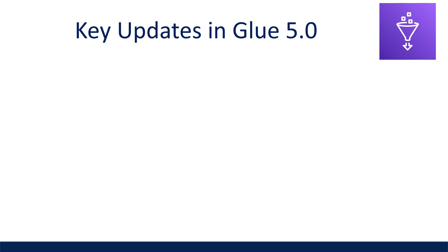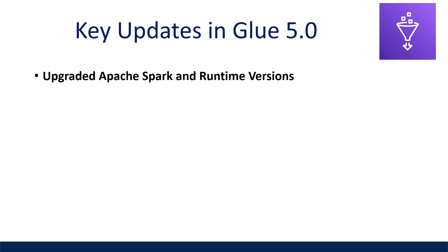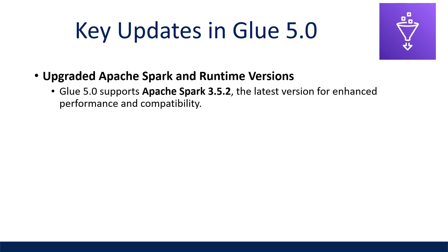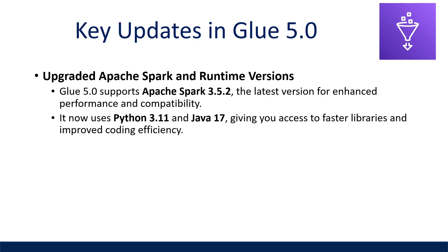Upgraded Apache Spark runtime versions: AWS Glue 5.0 supports Apache Spark 3.5.2, one of the latest versions, for enhanced performance and compatibility. It also uses Python 3.11 and Java 17, giving you access to faster libraries and improved coding efficiencies.